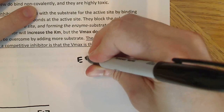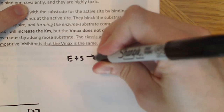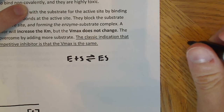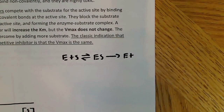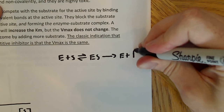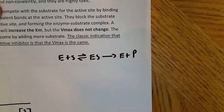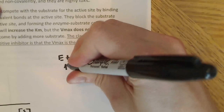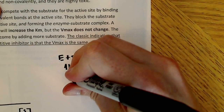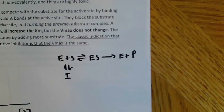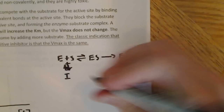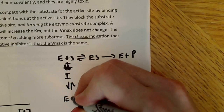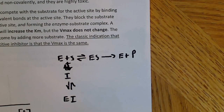The reaction pathway is: enzyme plus substrate forms the enzyme-substrate complex, which then proceeds to enzyme plus product — the enzyme is regenerated as a catalyst. With competitive inhibition, we have another pathway where the inhibitor is added. Enzyme plus inhibitor gives the enzyme-inhibitor complex instead of proceeding to product. That's exactly how competitive inhibition works.